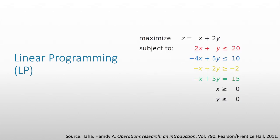This is an example of a linear program. Here, we have two variables, x and y, and we have the objective function where we maximize z, which is equal to x plus 2y, and it is subject to a set of constraints which are written here.